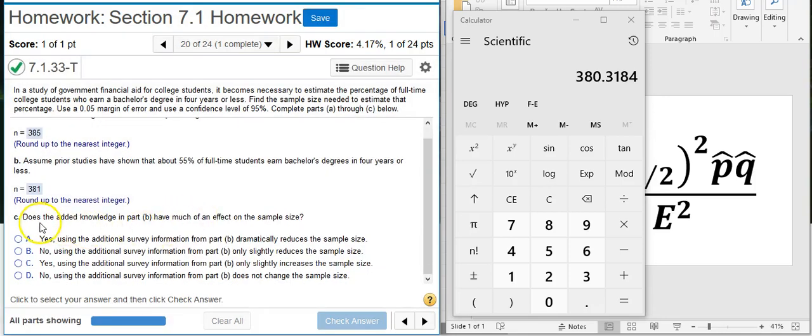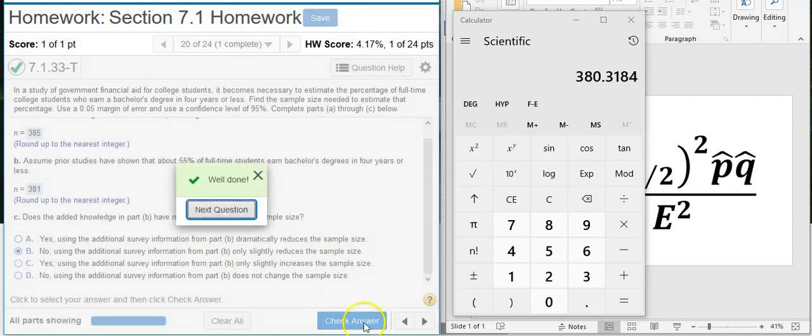Now Part C says, does the added knowledge in Part B have much of an effect on the sample size? Well, we went from 385 down to 381. So our sample size got reduced by like four people. It's not a very large reduction. It's only slightly reduced. So I would say it doesn't have that much of an effect. And I'm going to select the answer option here that basically says that. No, it only slightly reduces the sample size. Well done!